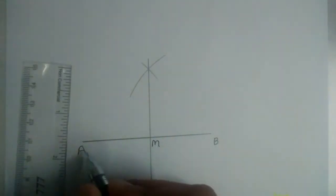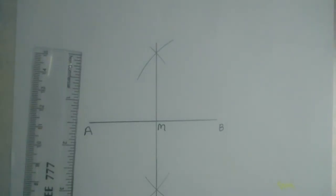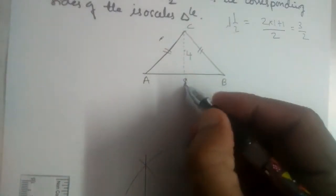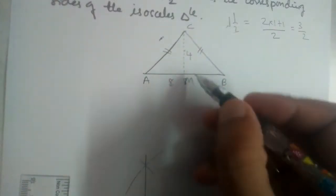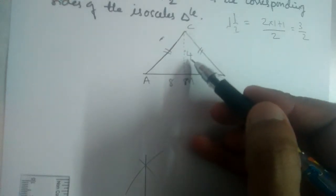M is now the midpoint of AB. Now here, if this is M, this is 8 cm base, the CM should be 4 cm.